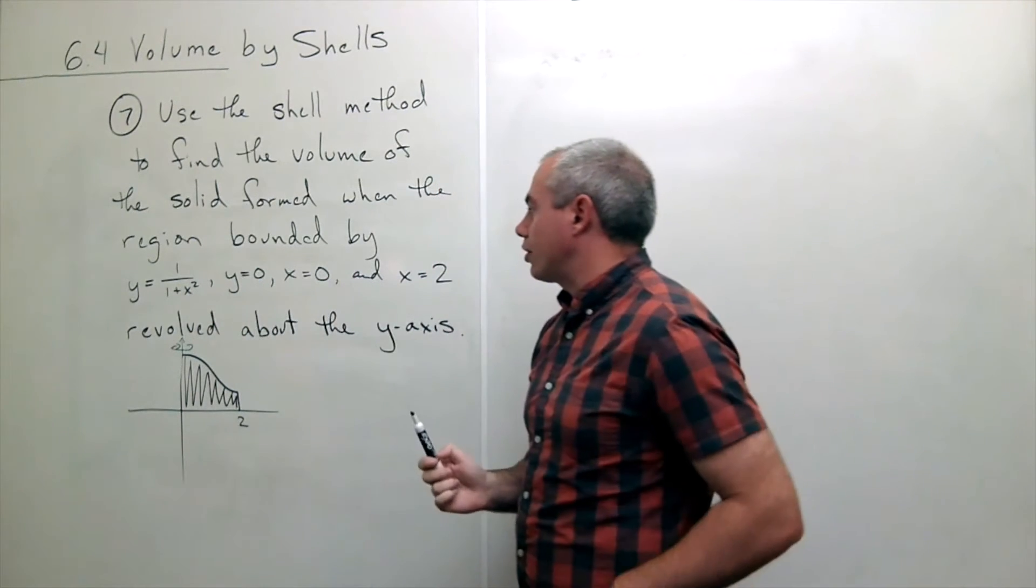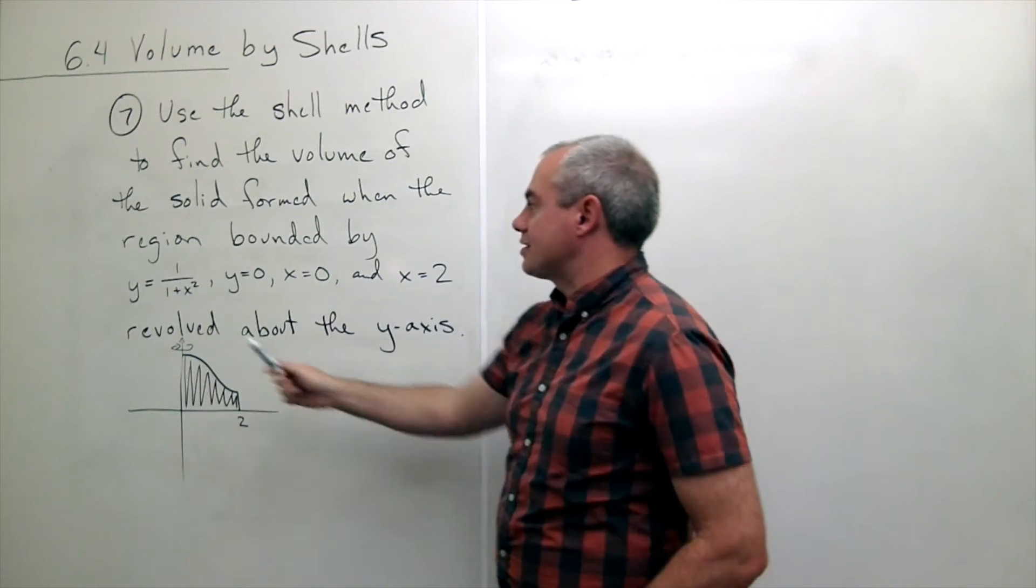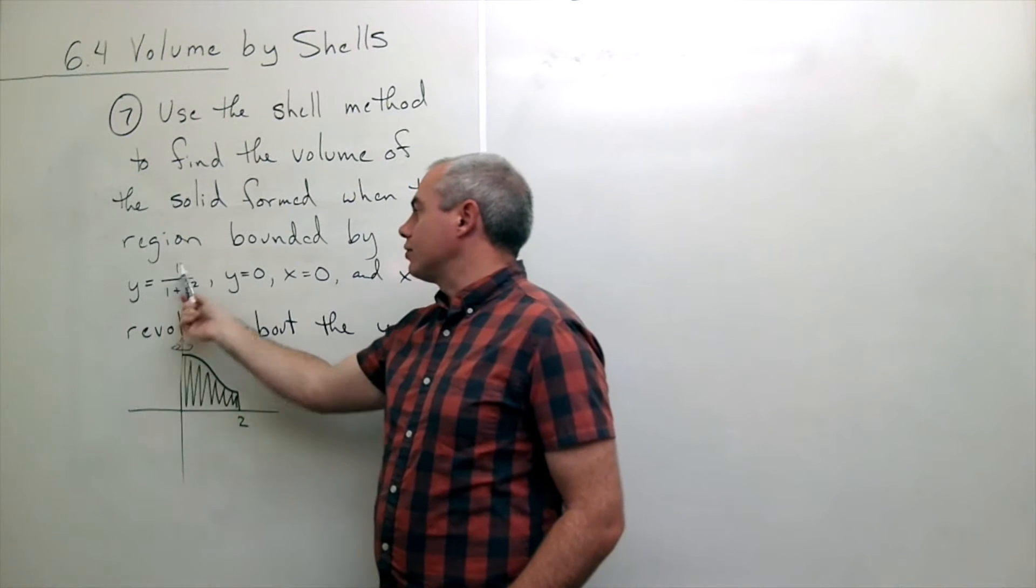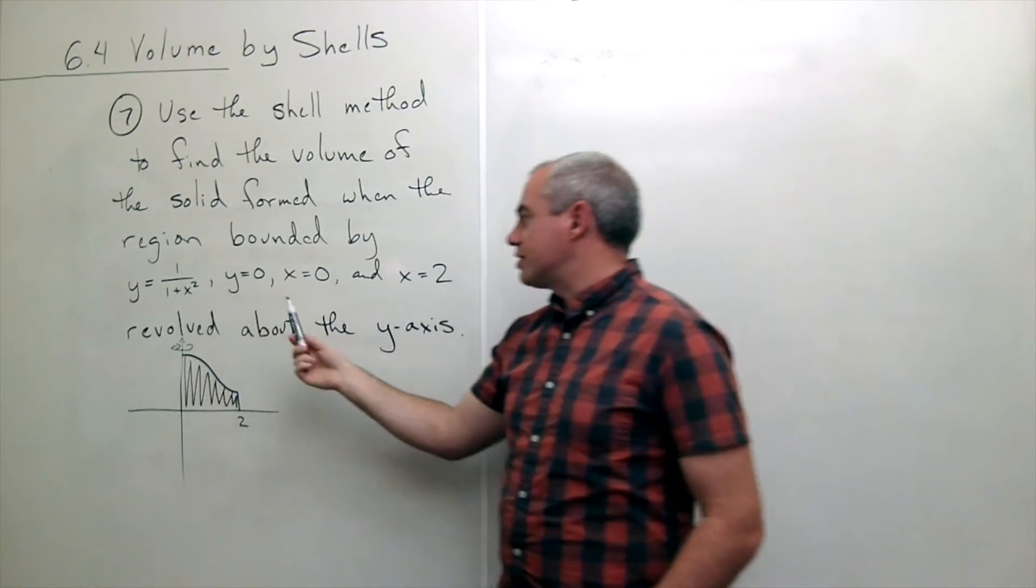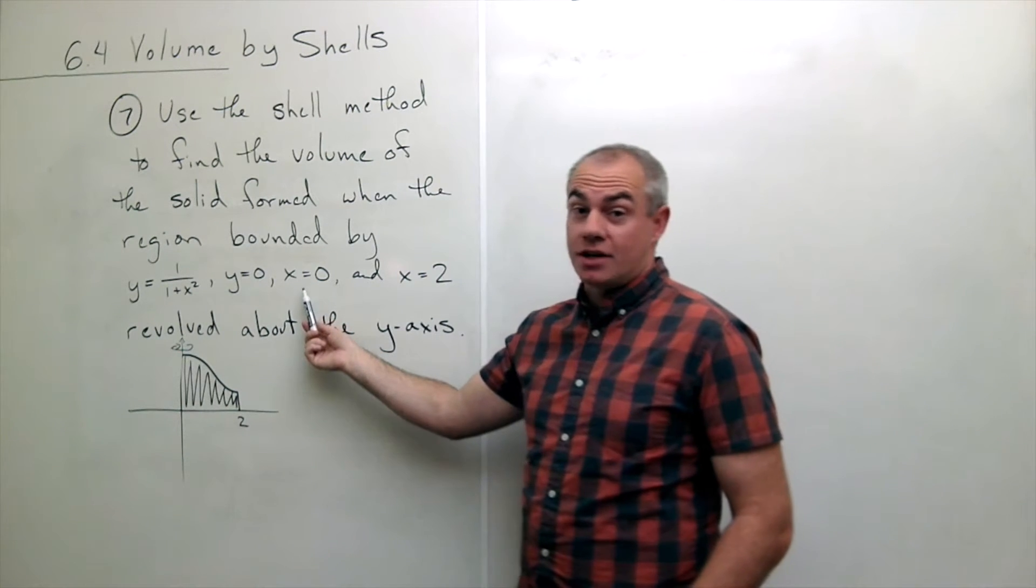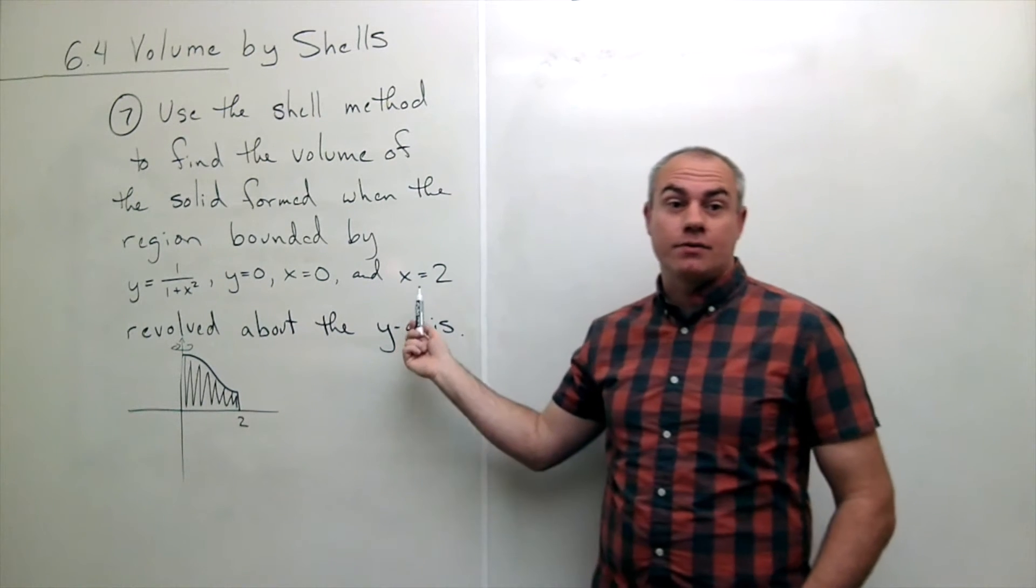the region bounded by these four curves is revolved around the y-axis and the curves are y equals 1 divided by 1 plus x squared, y equals 0, x equals 0, and x equals 2.